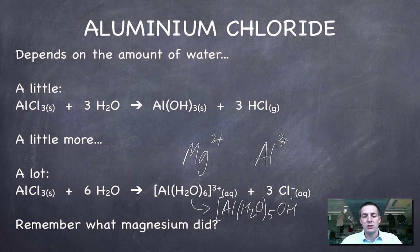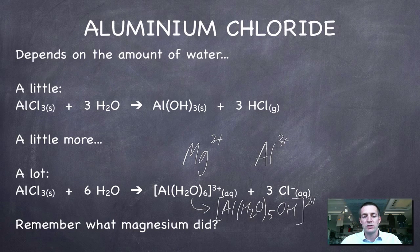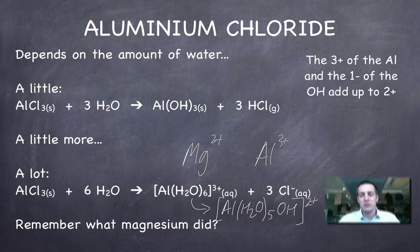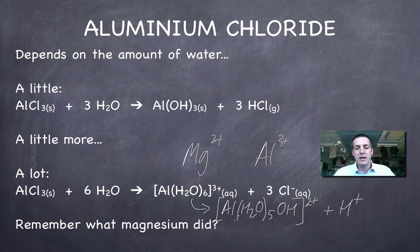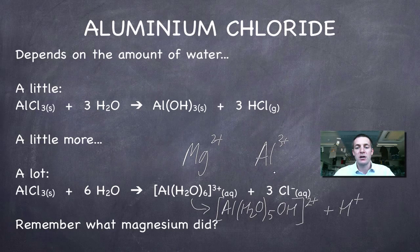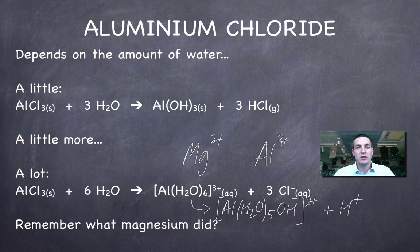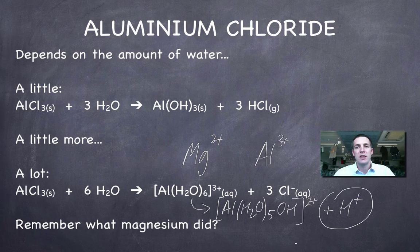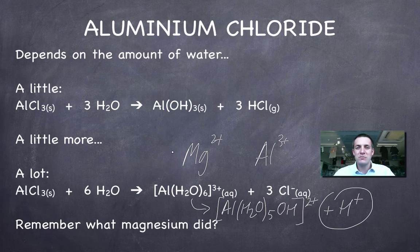So we can end up with this complex forming where we've got five water molecules around the aluminium, but one of them has lost an H+ ion and become a hydroxide ion. If we've got an OH- ion as part of this formula, we'll see that the charge is only 2+, and then that's going to release H+ ions. Just remember that aluminium, on account of the fact that it's such a highly polarizing ion, can cause water's bonds between its oxygen and its hydrogen to break and end up with H+ ions in solution, and that makes the solution acidic.